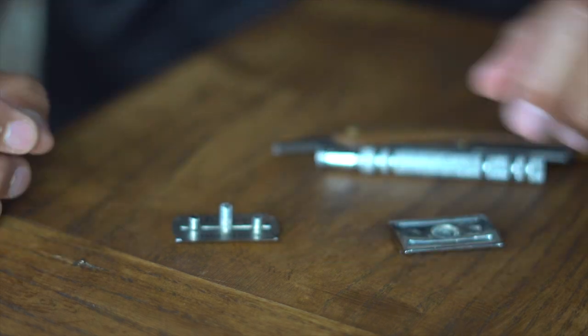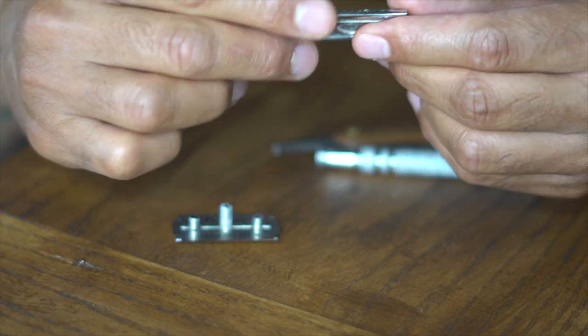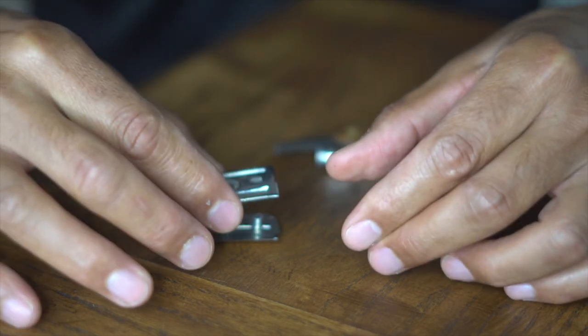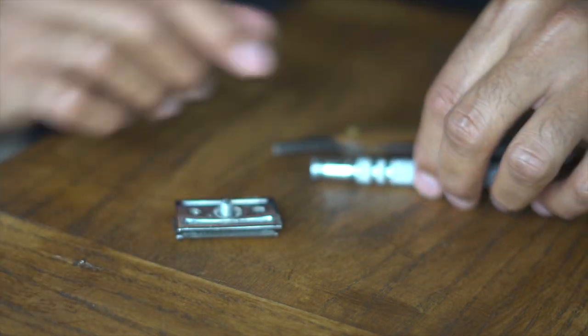You want to just drop your blade in like that. You want to go ahead and apply this part down where you see the ridges at. You want to put that on top of the blade, then you want to go ahead and screw it back on.